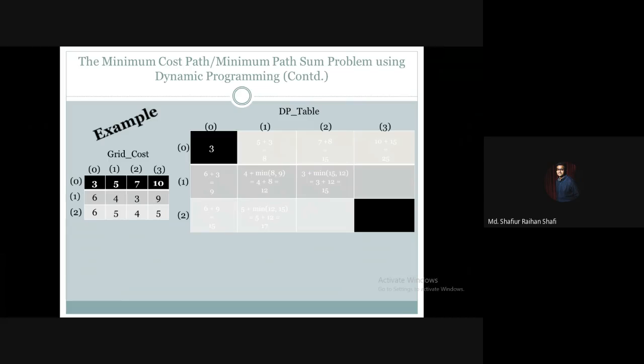For cell (1,2), it will be its own cost of 3 plus the minimum of the upper cell and the left cell. The upper cell has 15, the left cell has 12, so minimum is 12. Three plus twelve gives us 15. Same way, for cell (2,2), it will be 4 plus the minimum of 15 and 17, which is 15. So 4 plus 15 gives us 19.